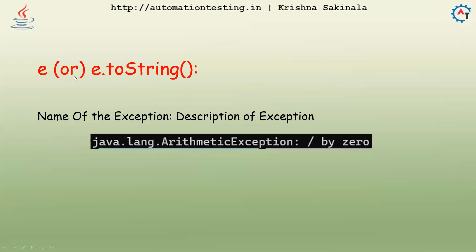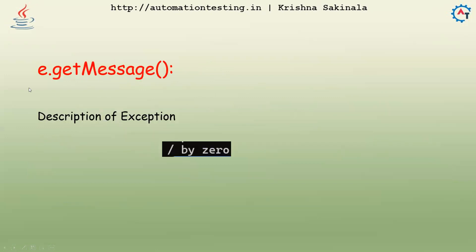The second one is e or e.toString(). In that case it will not print the stack trace, but it will print the name of the exception and the description of the exception. The third one is e.getMessage(), which will print only the description of the exception — for example 'division by zero' — it will print only that information.